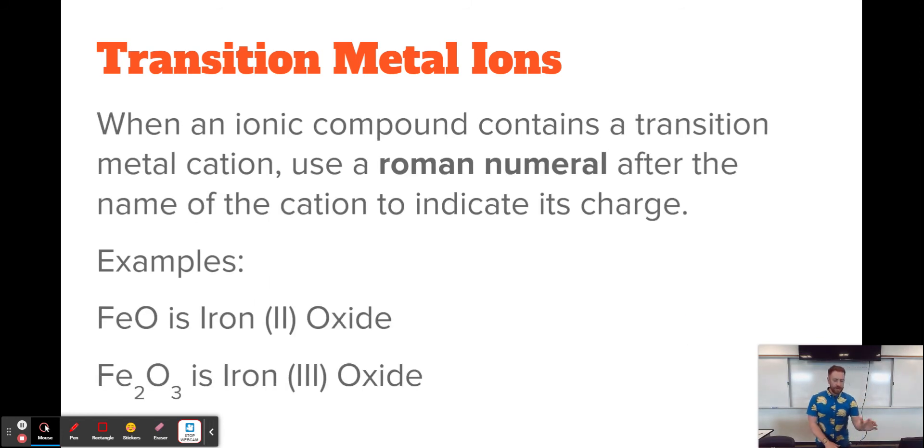So when we write names for ionic compounds that contain transition metals, what we have to do is we have to include a Roman numeral. And the Roman numeral indicates the oxidation state or charge of that transition metal. So, for example, in this compound...